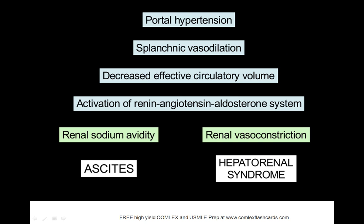Patients who generally have portal hypertension on the board exam result in splanchnic vasodilation. There's decreased effective circulatory volume, and there's an activation of the renin-angiotensin-aldosterone system. Finally, you want to look at the renal sodium levels or if there's any renal vasoconstriction to see if patients develop ascites or hepatorenal syndrome.